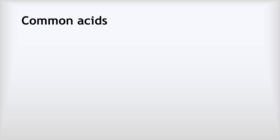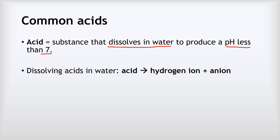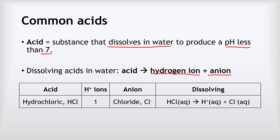An acid is any substance that dissolves in water to produce a pH of less than 7. When acids dissolve in water they all release hydrogen ions and a negative ion called an anion. The first acid to know is hydrochloric acid, formula HCl. When it dissolves in water it releases one hydrogen ion per molecule and a chloride ion (Cl⁻): HCl(aq) → H⁺ + Cl⁻.